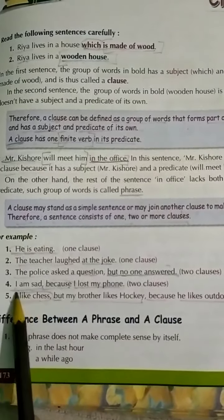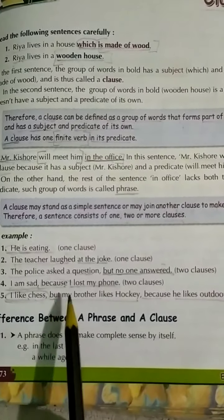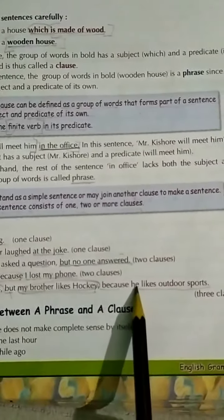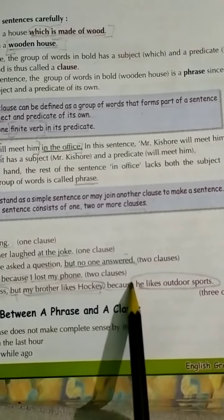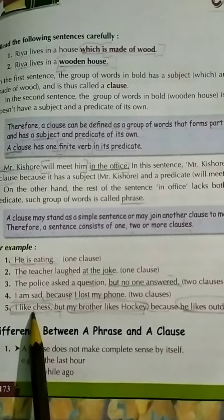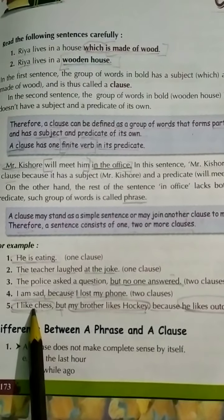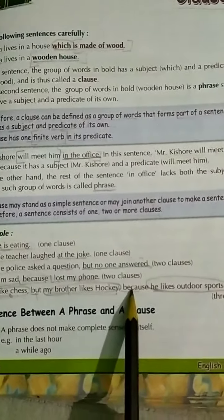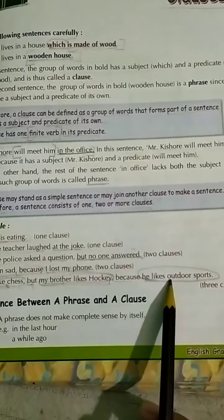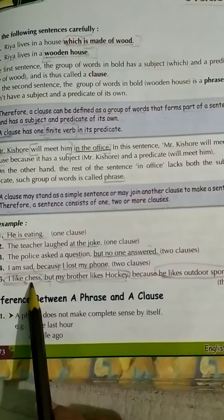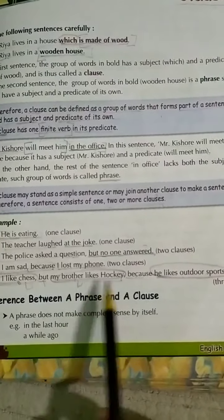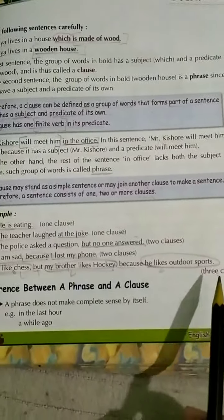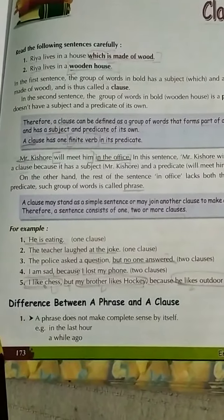'I like chess, but my brother likes hockey, because he likes outdoor sports.' Here we have three clauses: 'I like chess,' 'my brother likes hockey,' and 'he likes outdoor sports.' So this sentence is made up of three clauses.